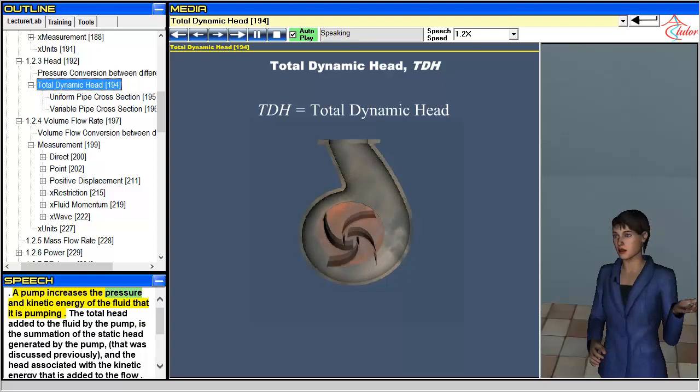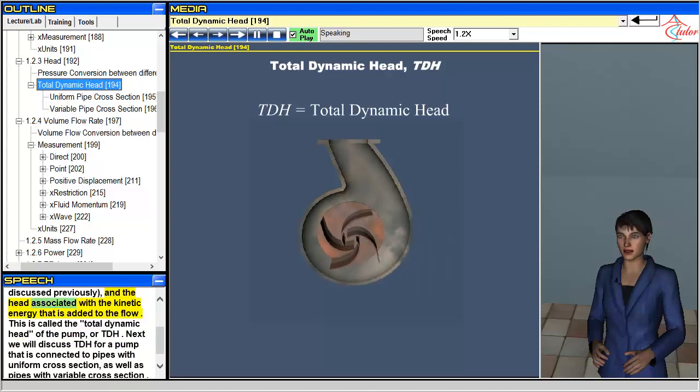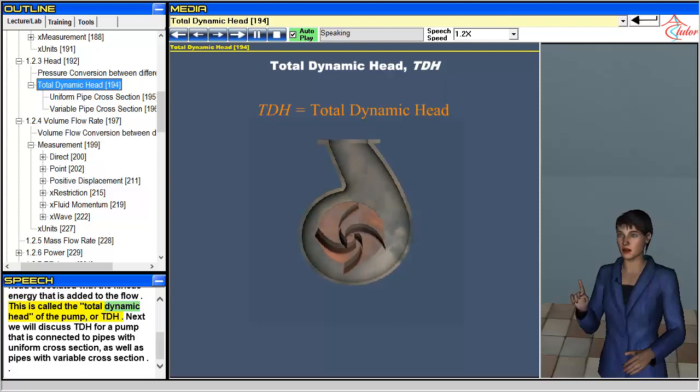A pump increases the pressure and kinetic energy of the fluid that it is pumping. The total head added to the fluid by the pump is the summation of the static head generated by the pump that was discussed previously, and the head associated with the kinetic energy that is added to the flow. This is called the total dynamic head of the pump, or TDH.